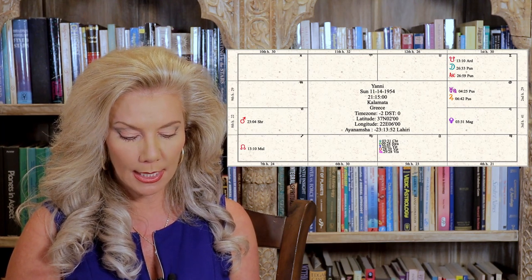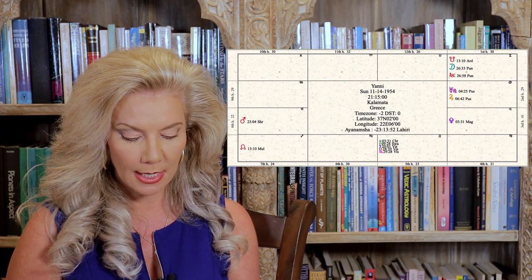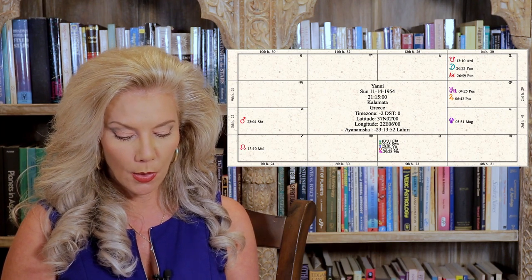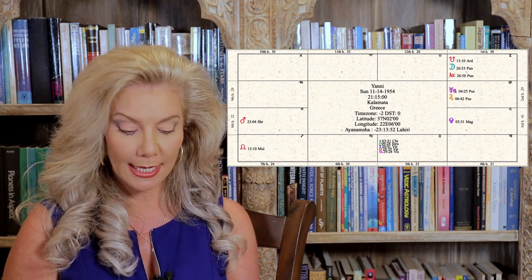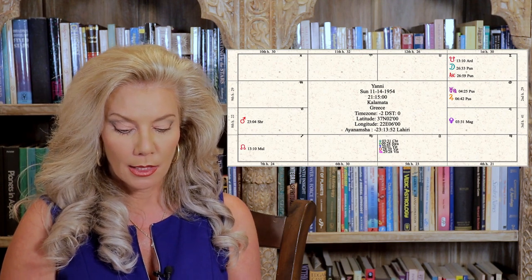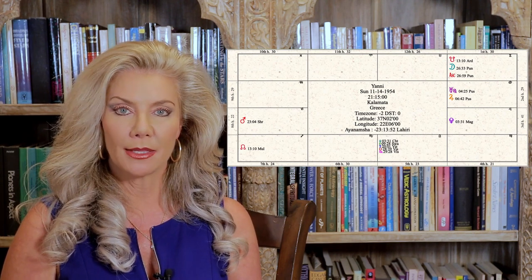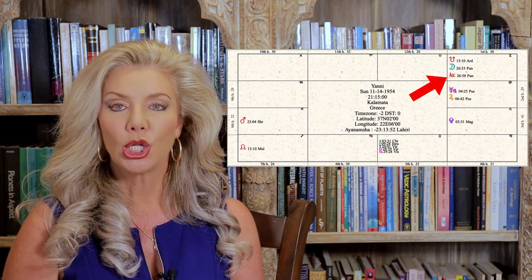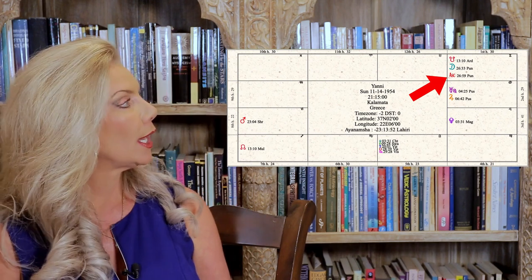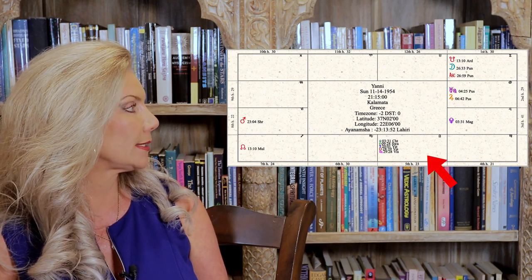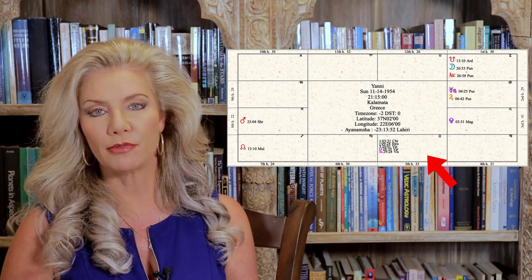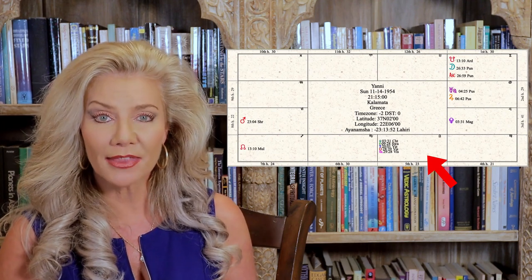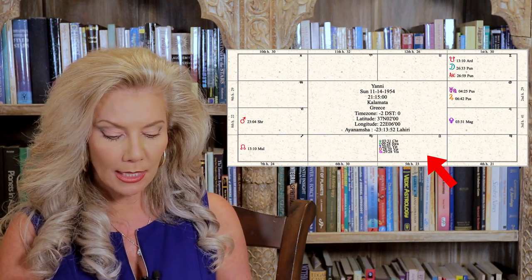Yanni was born November 14th, 1954, in Kalamata, Greece. Looking at this chart, we're going to make Gemini the ascendant. Counting from Gemini as the ascendant, look to where the fifth house is. All those beautiful planets, powerfully placed in the fifth house. And look at that.